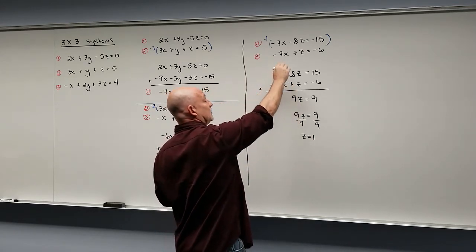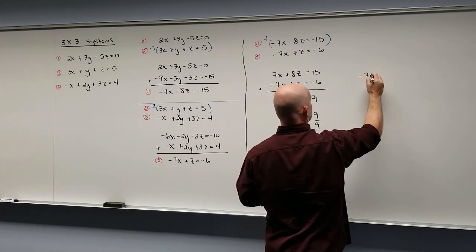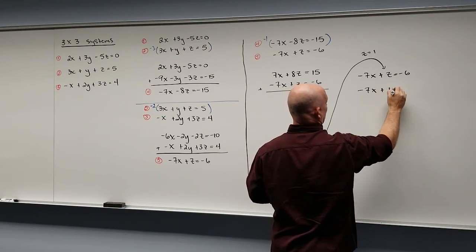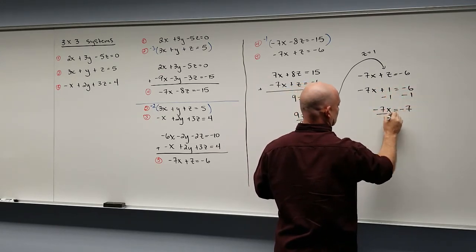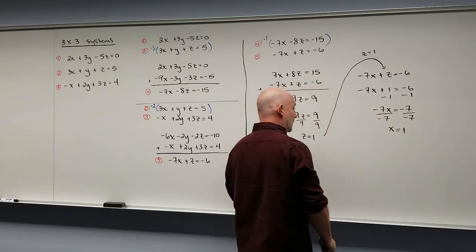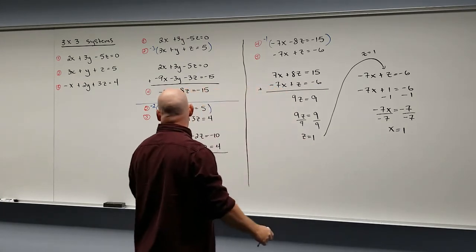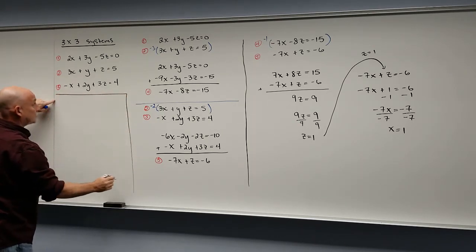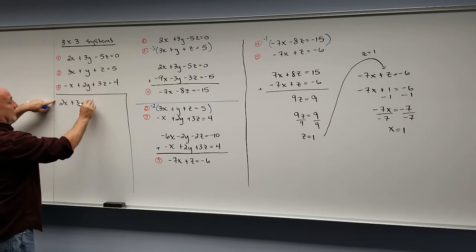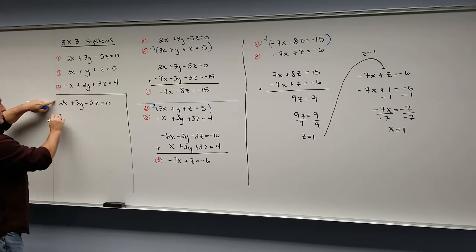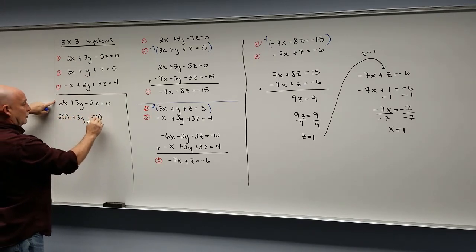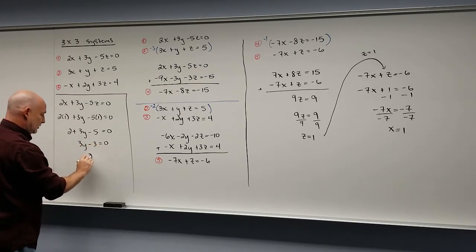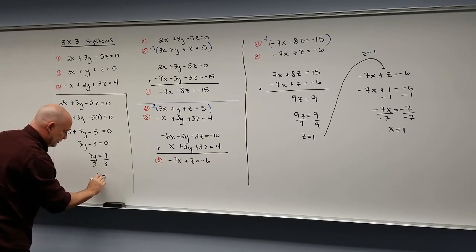Once we have one value, we back substitute. Using equation 5: negative 7x plus z equals negative 6. Plugging in z equals 1: negative 7x plus 1 equals negative 6, so x equals 1. Now we have two of our three values. Back substituting into the first original equation: 2x plus 3y minus 5z equals 0. With x equals 1 and z equals 1: 2 plus 3y minus 5 equals 0, so 3y minus 3 equals 0, giving y equals 1.